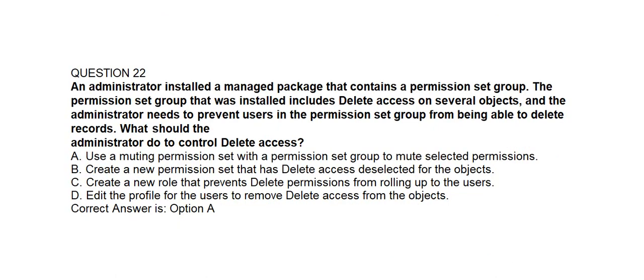Question number twenty-two. An administrator installed a managed package that contains a permission set group. The permission set group includes delete access on several objects, and the administrator needs to prevent users from being able to delete records. What should the administrator do to control delete access? Option A: Use a muting permission set with a permission set group to mute selected permissions. Option B: Create a new permission set with delete access deselected. Option C: Create a new role that prevents delete permissions from rolling up. Option D: Edit the profile for the users to remove delete access. Correct answer is Option A.